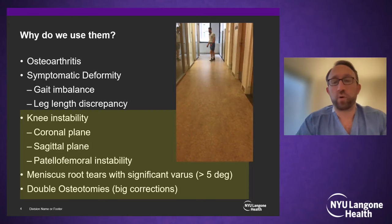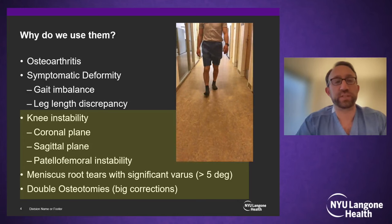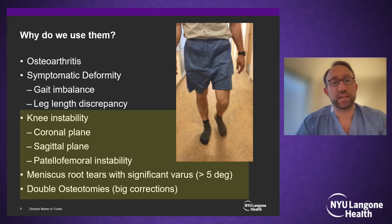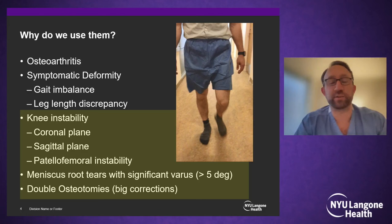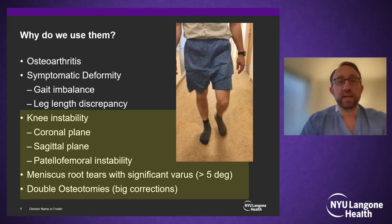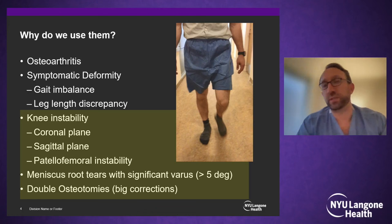We use osteotomies for OA and symptomatic deformity, but more often lately for knee instability — whether in the coronal or sagittal plane — and for patellofemoral instability where DFOs have come into the mainstream for patients with extreme valgus. Meniscus root tears with significant varus (more than 5 degrees) should be considered for HTO, because keeping them in 10 degrees of varus substantially raises the risk of failure. If they're going to be non-weight-bearing for six weeks, doing an osteotomy simultaneously substantially improves their chance of success.